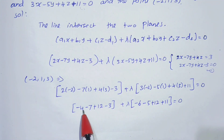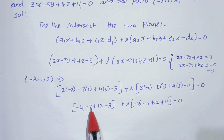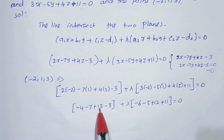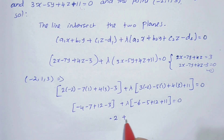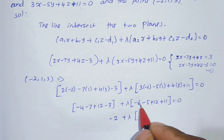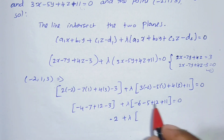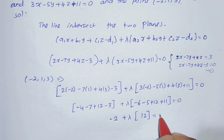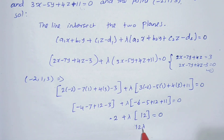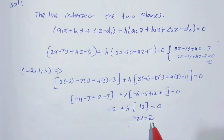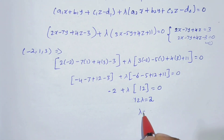Adding the terms: minus 4 minus 7 plus 12 minus 3 gives minus 2, and minus 6 minus 5 plus 12 plus 11 gives 12. So minus 2 plus 12 lambda equals 0, which means lambda equals 1/6.